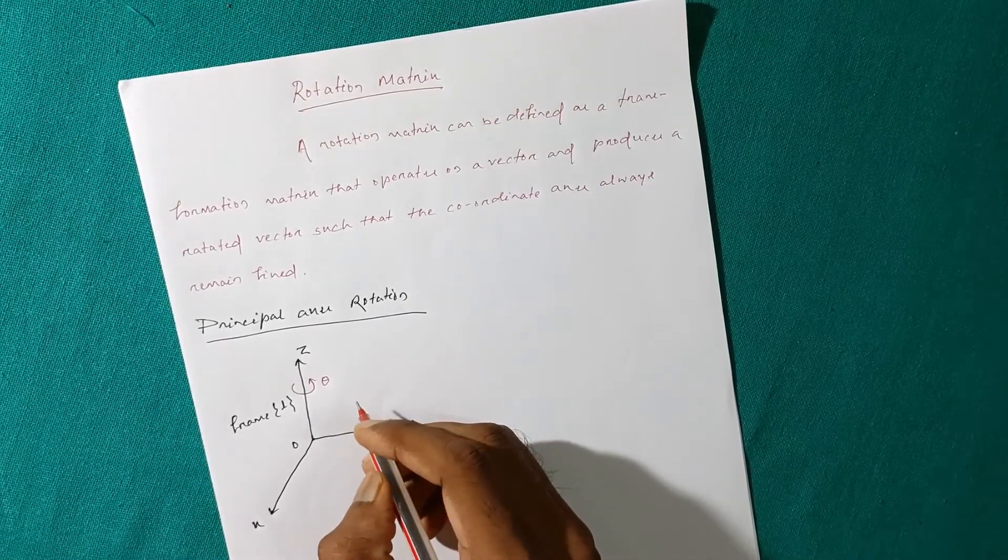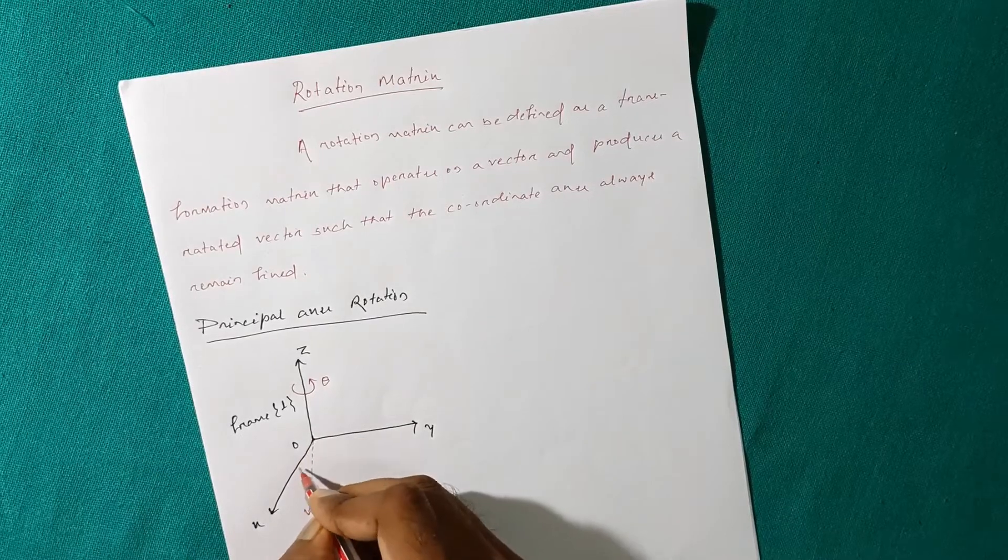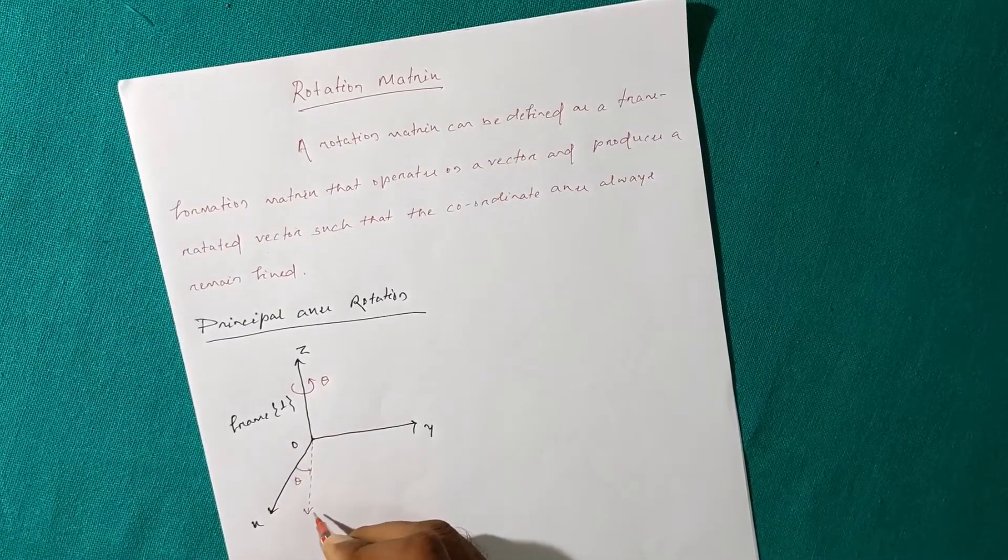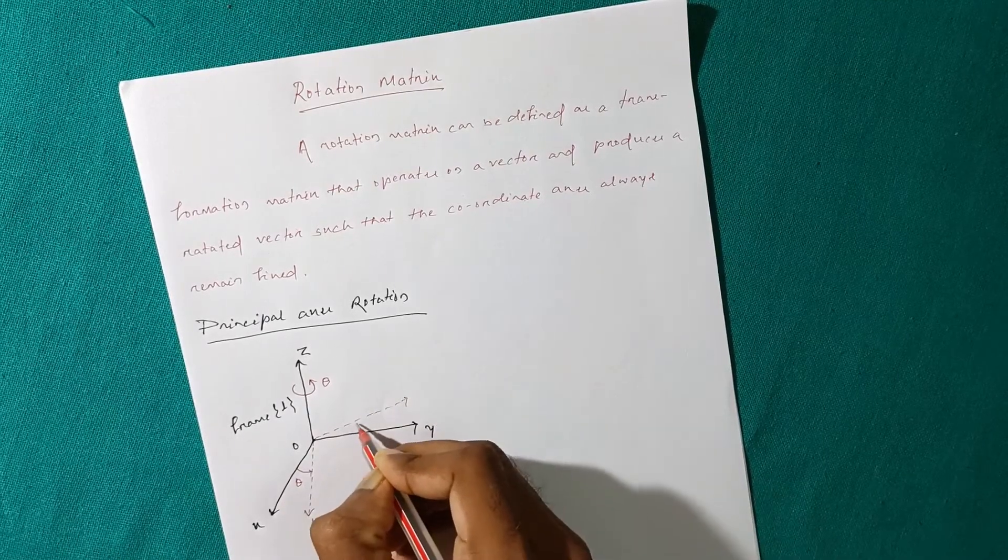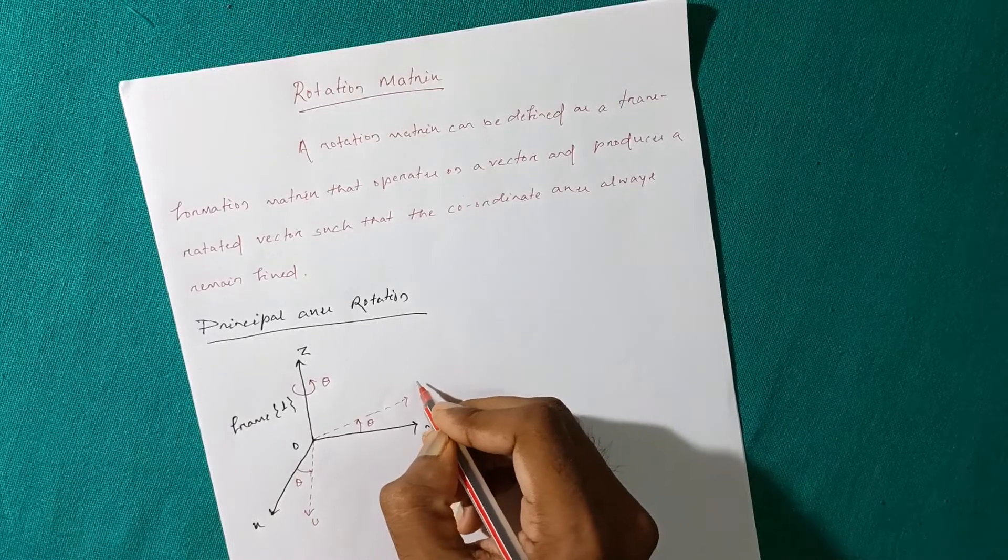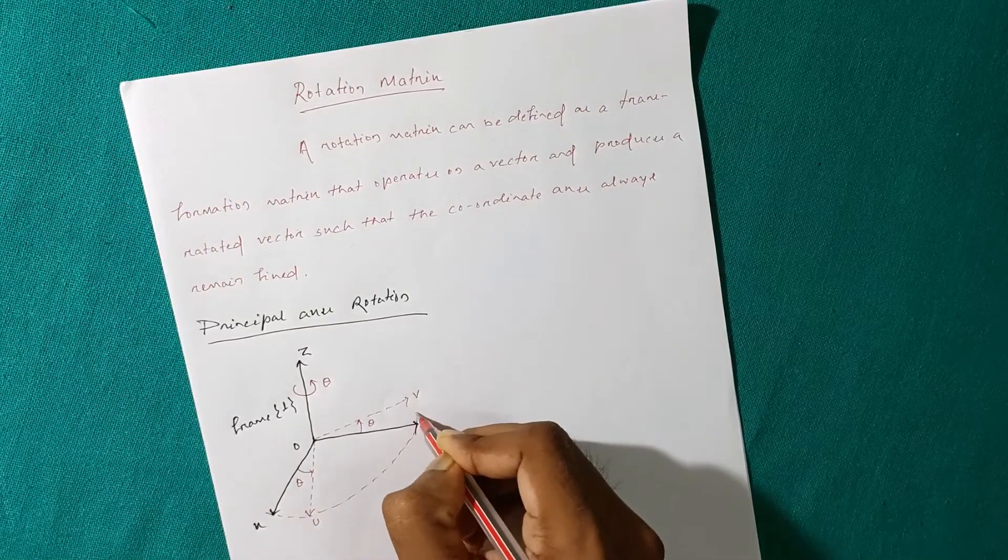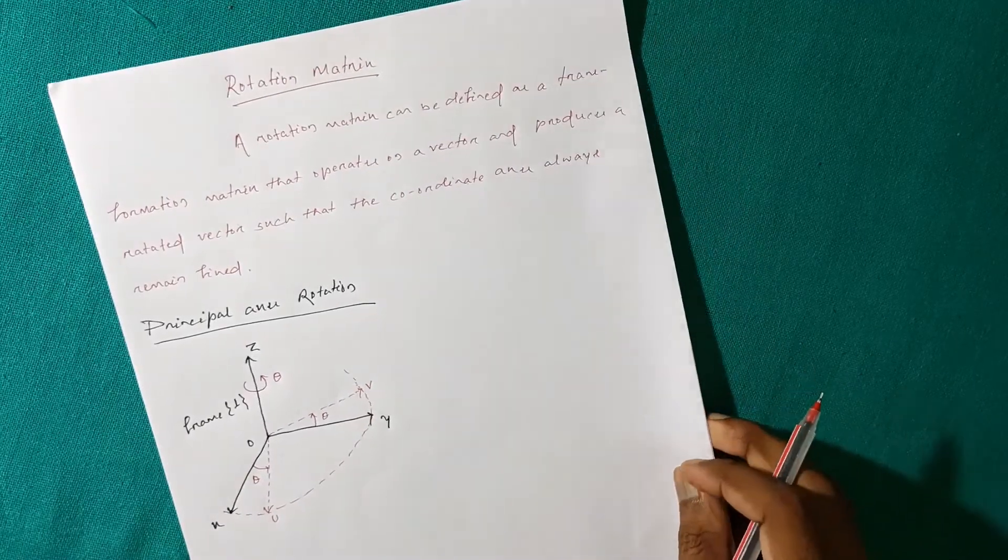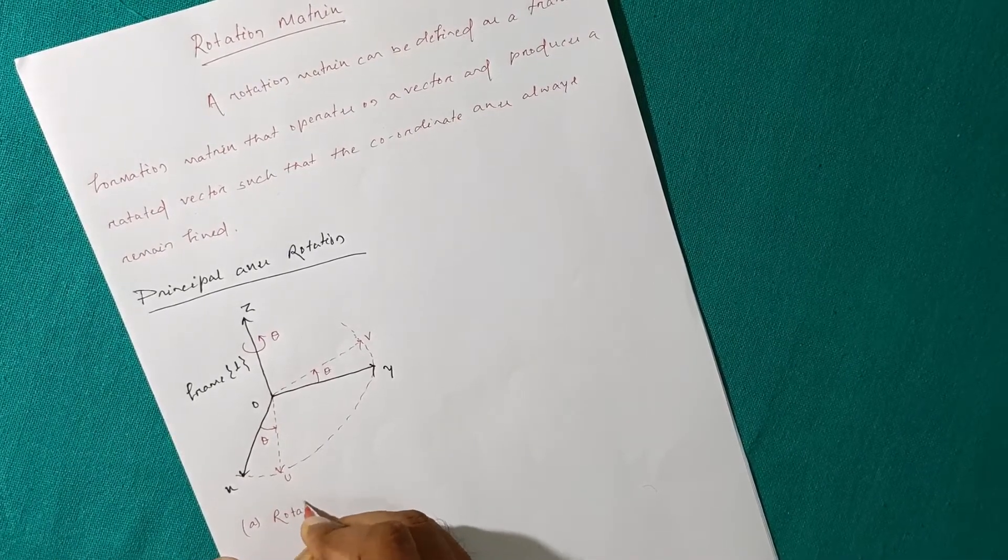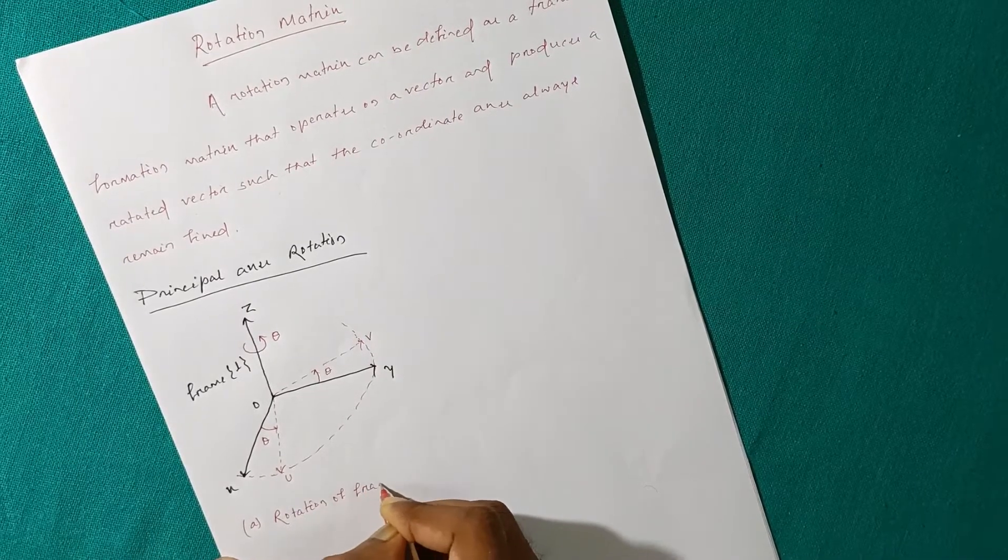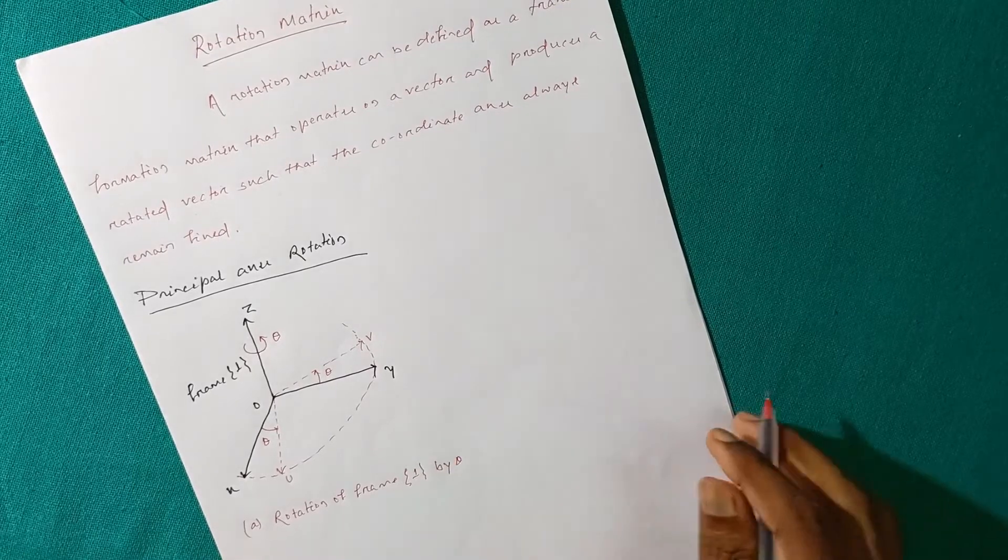So what will happen? We can obtain the new axis here and this angle is theta. We can name it as frame B. So as you can see this is the type of rotation we got here. This diagram represents rotation of frame 1 by theta.